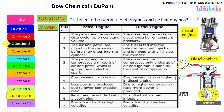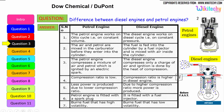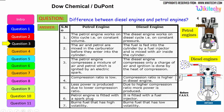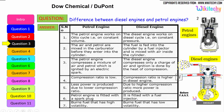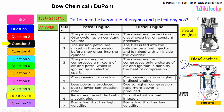The petrol engine compresses a mixture of air and petrol which is ignited by an electrical spark, whereas the diesel engine compresses only a charge of air and ignition is done by the heat of compression. The compression ratio is lower in petrol engines, producing less power, while the higher compression ratio in diesel engines produces more power. The petrol engine is fitted with a spark plug, while the diesel engine is fitted with a fuel injector.